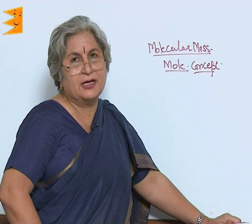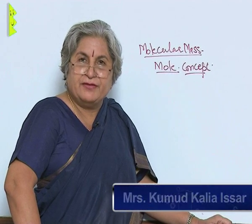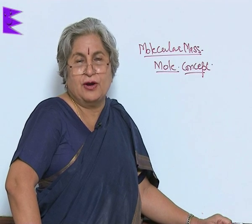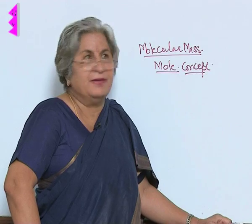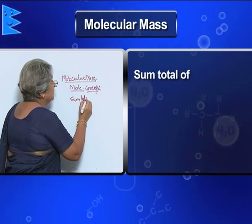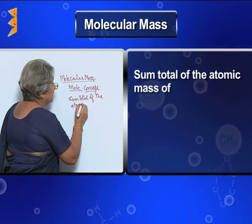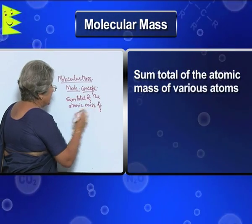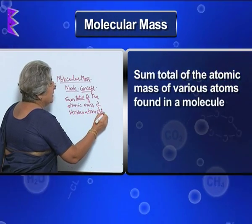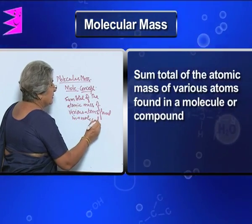If the mass of an atom is atomic mass, then what will be the mass of a molecule? A molecule can have more than one atom, so the sum total of the atomic masses of all the atoms will make the molecular mass — the sum total of the atomic masses of various atoms found in a molecule, whether it is a compound or the same element.